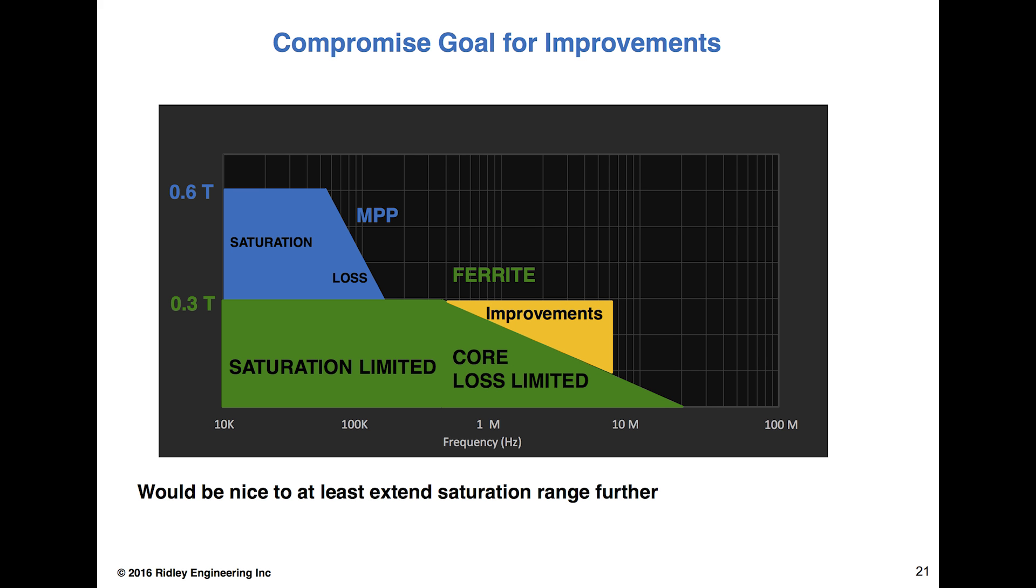Now, compromise goal for magnetics: maybe we can't have 0.6 Tesla and we can't have five times lower losses, but maybe we could get this little yellow triangle worked on. For me, high frequency development goes up to about five megahertz. I can't see a lot of motivation for moving beyond five megahertz. It's been done many times before but hasn't really improved the density very much. But if we can just work on this corner of getting the saturation level design point extended further with lower losses, maybe that would help us.